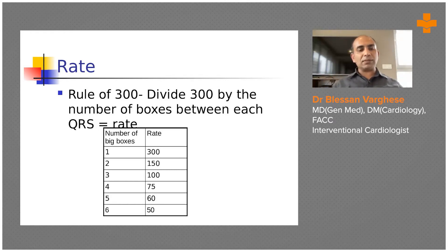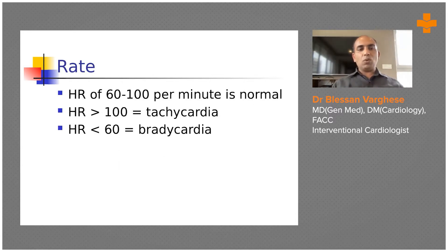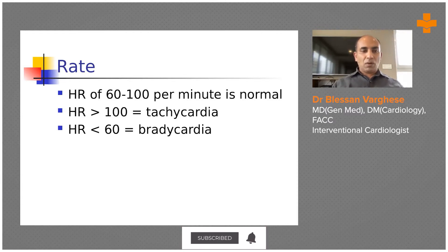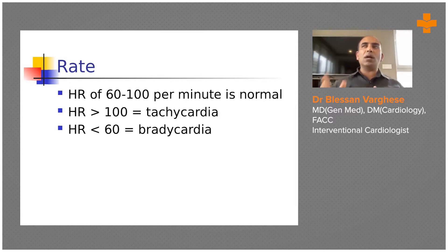If there are six big boxes between two R waves, then 300 divided by six means the heart rate is 50. This is called the Rule of 300. However, it is only applicable when the rate is regular. When the rate is irregular — such as in atrial fibrillation — this rule cannot be applied. The normal heart rate falls between 60 to 100 per minute, which is the normal sinus rhythm.